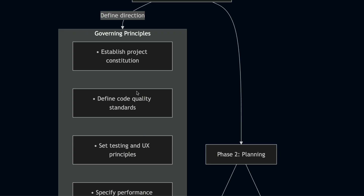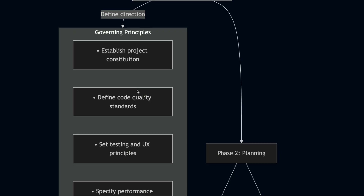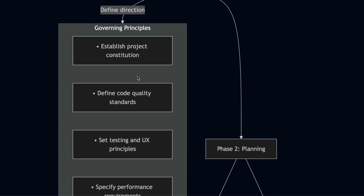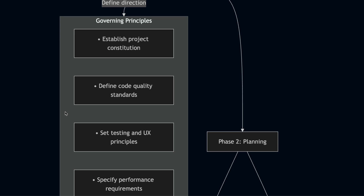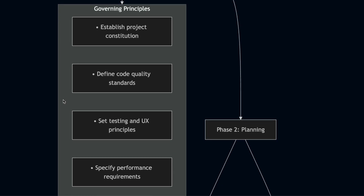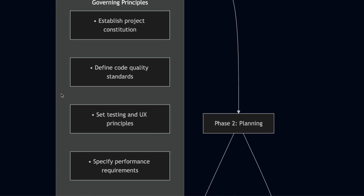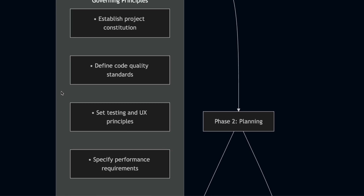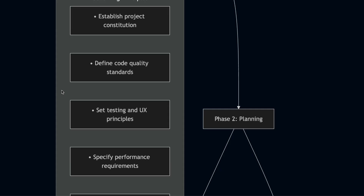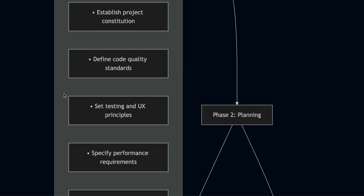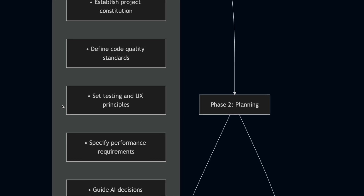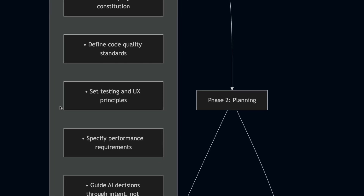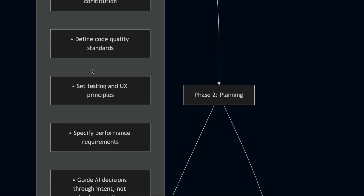So for example, instead of saying 'build me a user dashboard using React and Node,' you would say 'users need a way to see their activity over time, compare different metrics, and export their data for further analysis.' You are defining the intent, not the implementation.